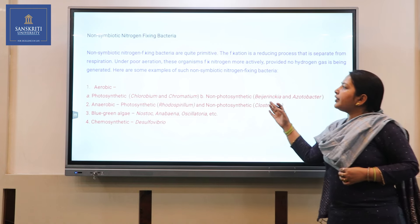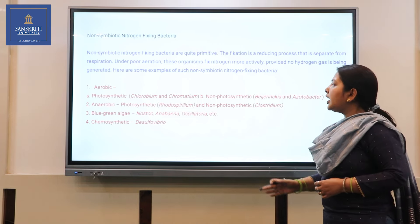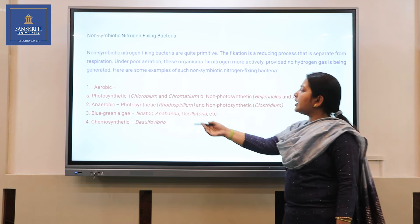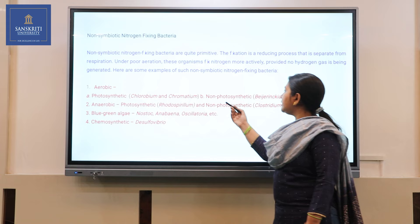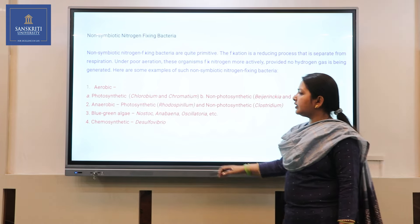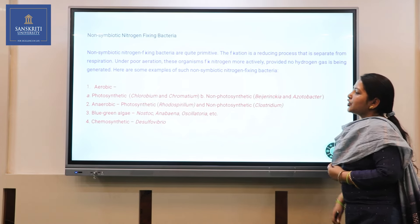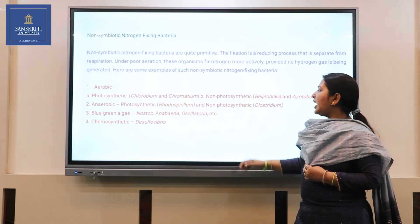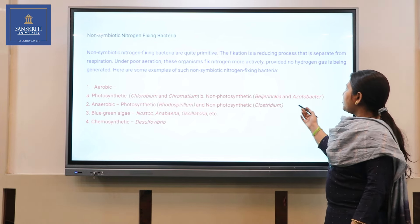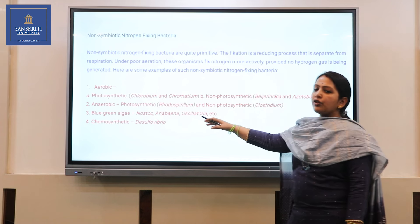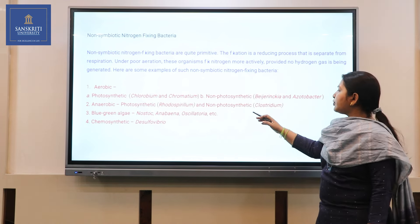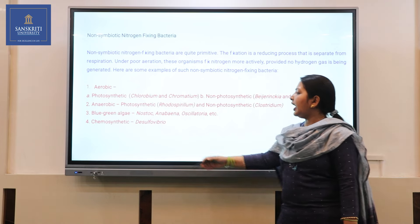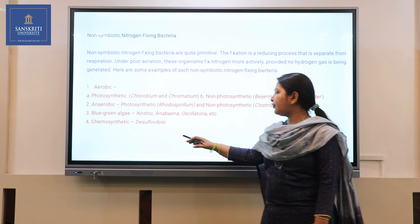In non-symbiotic nitrogen fixation, four different types of bacteria are involved. The first is aerobic, which can be photosynthetic — such as Chlorobium or Chromatium — and non-photosynthetic — such as Azotobacter or Beijerinckia. Anaerobic bacteria can also be photosynthetic, whose example is Rhodospirillum, and non-photosynthetic, which is Clostridium. The third type is blue-green algae, examples of which include Nostoc, Anabaena, and Oscillatoria. The fourth is chemosynthetic, whose example is Desulfovibrio.